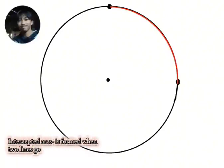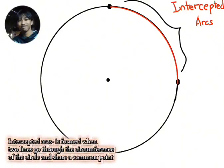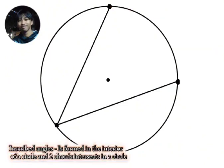Intercepted arcs. It is formed when two lines go through the circumference of the circle and share a common point. Inscribed angles. It is formed in the interior of a circle when two chords intersect in a circle.